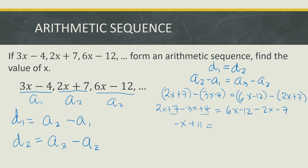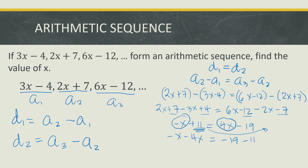On the other side of the equal sign, 6x minus 12 minus 2x minus 7 — changing the sign of the second term — gives us 4x. And negative 12 minus 7 is negative 19. Now transposing: negative x and positive 4x combined by moving 4x gives negative 4x. Transposing positive 11 gives negative 11. So negative x minus 4x is negative 5x, and negative 19 minus 11 is negative 30.